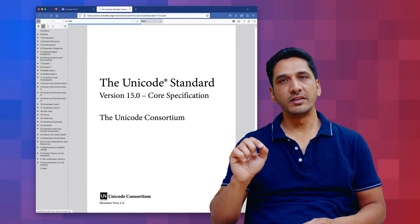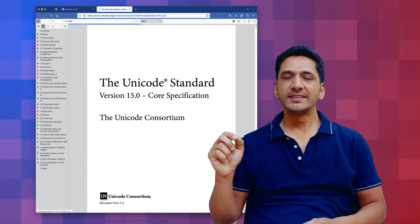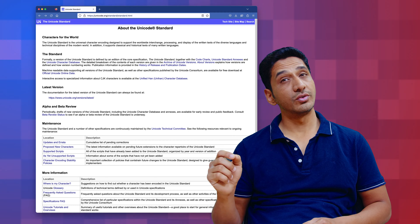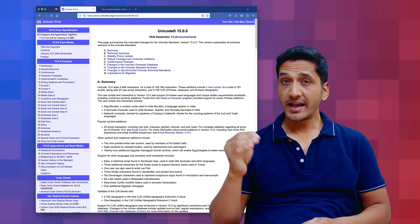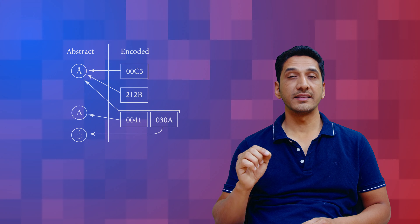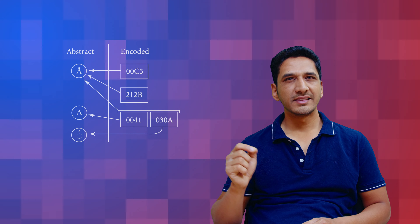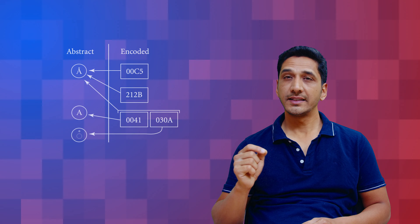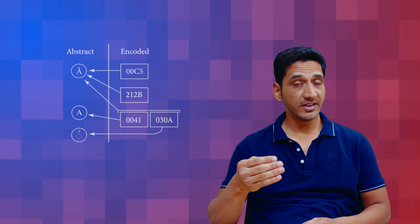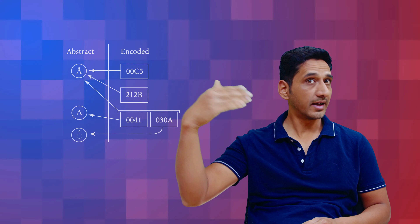Now I know what you're thinking — how does Unicode know which code to assign to each character and symbol? The answer is simple: it's all in the Unicode standard. It's like a rulebook that tells Unicode which code to assign to each character and symbol. But like any rulebook, there are exceptions. There are some characters and symbols that are assigned multiple codes — it's like having a secret handshake for your best friend and then discovering they have a secret handshake for their other best friend too.